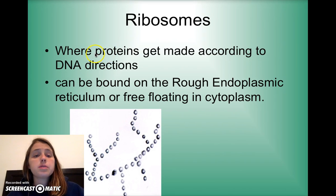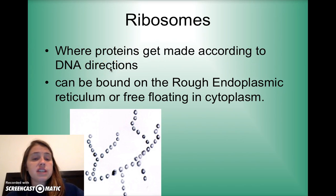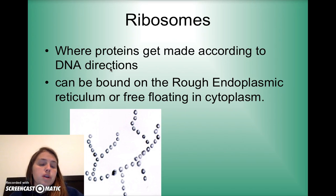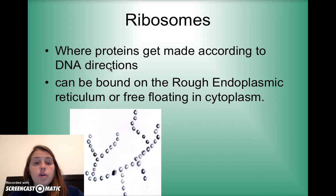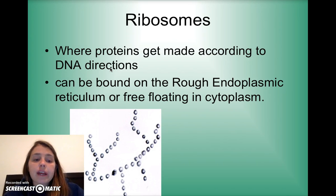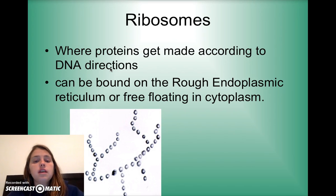Ribosomes are where proteins get made, according to DNA's directions. DNA is essentially the instructions for how to be you, or how the cell is going to function. DNA gives instructions to the ribosomes about what proteins to make, and those proteins direct what the cell does. Ribosomes can either be bound — implanted on the rough endoplasmic reticulum — or free-floating in the cytoplasm.